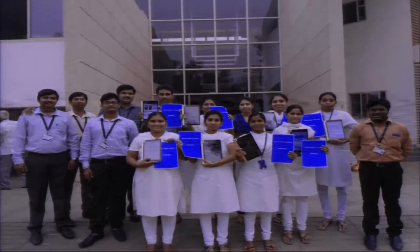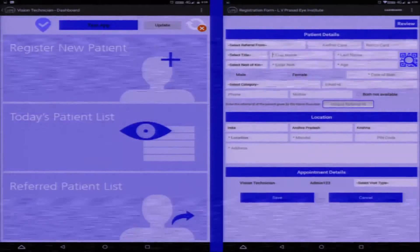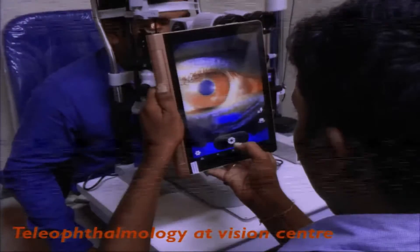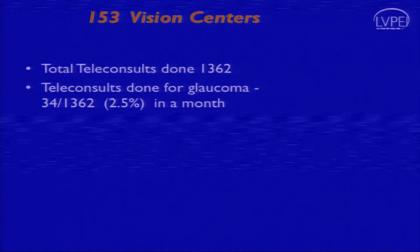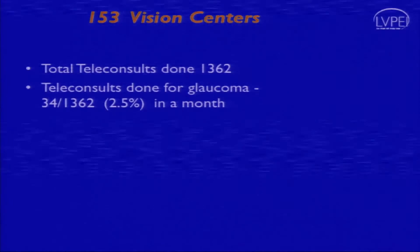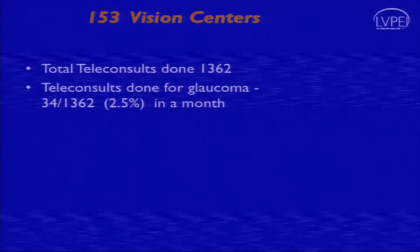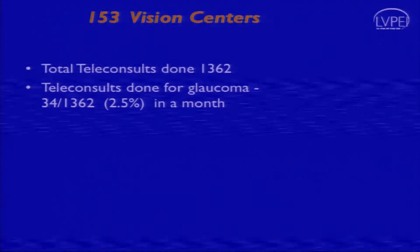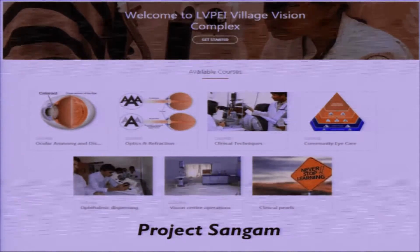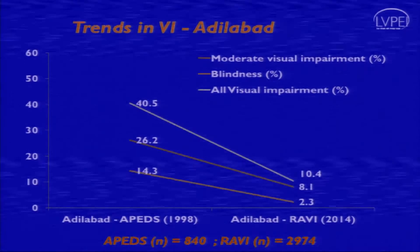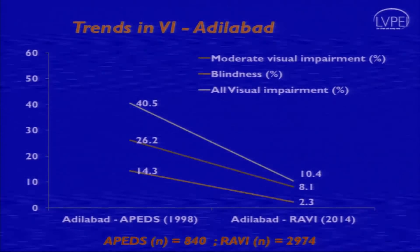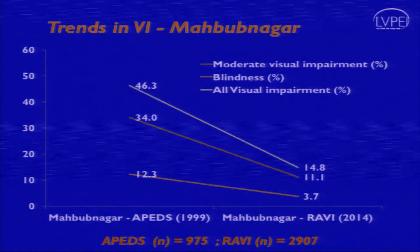Tablets were given to vision centers and training was done. In October 2017, using teleophthalmology consultation, we could pick up almost 2.5% glaucoma cases — approximately 34 glaucoma cases identified out of 1,362 consultations done. Project Sangam focuses on education for vision technicians using tablet-based applications. Looking at the impact over the past 10 years from 1998 to 2014, the prevalence has gone down by almost 200% in both areas where we had vision centers for the longest duration.